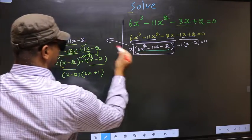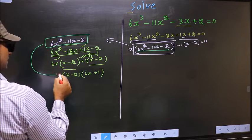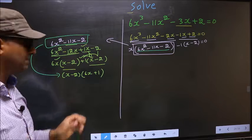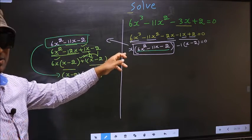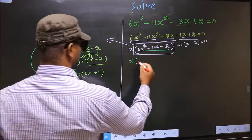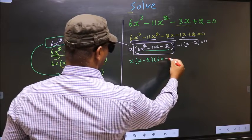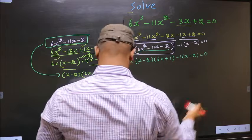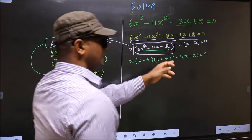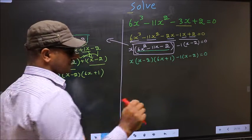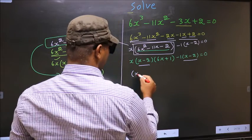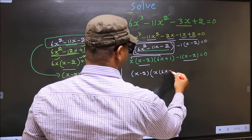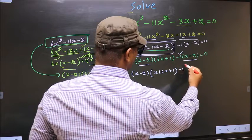Now in place of this quadratic we should replace this factored form. So this equation now changes to x times x minus 2 times 6x plus 1, and over here no change. From this entire equation, what can be taken out common is x minus 2. So x minus 2 outside; over here we are left with x times 6x plus 1 and over here minus 1, equal to 0.